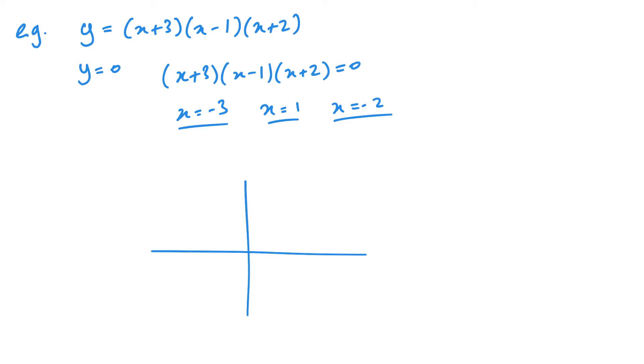Now, as well as that, I can look at what happens where it hits the y-axis. And this will happen when x is 0. So when x is 0, y would be equal to 3 times minus 1 times 2. So you can see here this is going to be equal to negative 6. And this is what's going to help me sketch my graph.